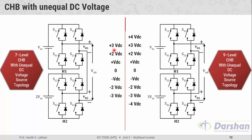To produce the maximum magnitude of plus 3VDC, the first bridge produces VDC and the second bridge produces 2VDC. The two diagonal switches in H1 and the two diagonal switches in H2 are triggered, giving VH1 equal to VDC and VH2 equal to 2VDC, so VDC plus 2VDC equals 3VDC at the output.